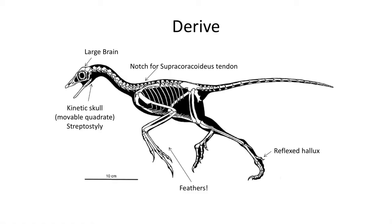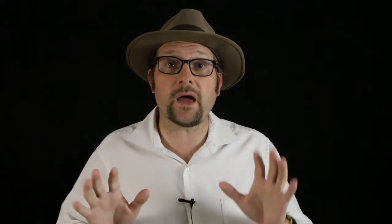The final new trait is what makes Archaeopteryx the first true bird. There is a groove for the supracoracoideus tendon in the coracoid bone. This enabled Archaeopteryx to flap the wings up and down through an expansive range of motion, indicating that it was able to perform powered flight on its own. Earlier, more primitive dinosaurs did not have this extensive range of motion, and while they could fly and glide, they were more limited in the ability to actively flap their wings.